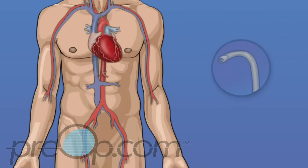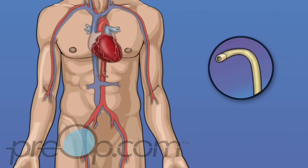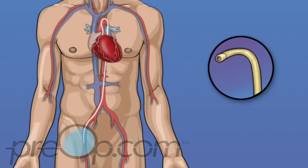To do a cardiac cath, a cardiologist places a thin tube called a catheter through an artery in your leg or arm to reach your heart. The femoral artery in the leg is commonly used. The catheter is inserted into the artery in the groin, then guided to reach the heart.